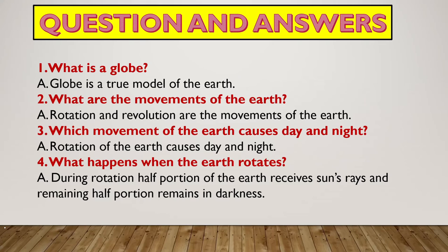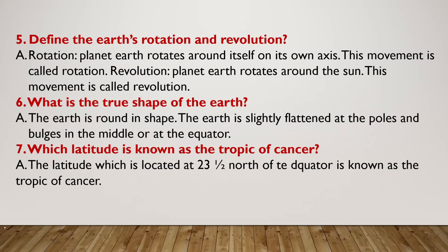What are the movements of the Earth? The movements of the Earth are rotation and revolution. Which movement of the Earth causes day and night? Rotation of the Earth causes day and night. What happens when the Earth rotates? During rotation, half portion of the Earth receives sun rays and the remaining half portion remains in darkness.